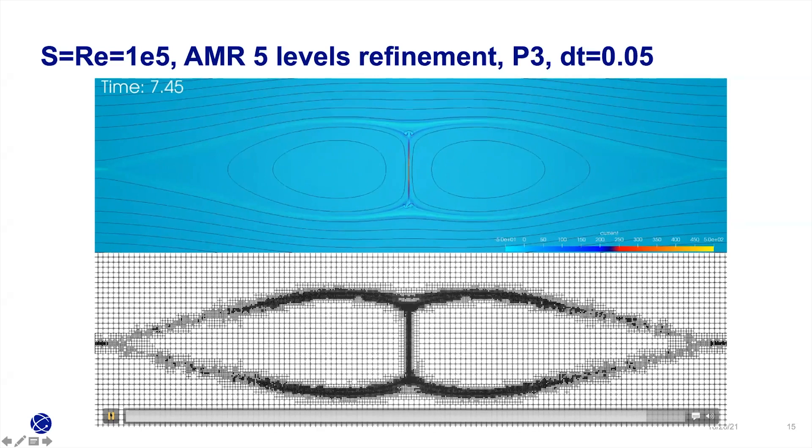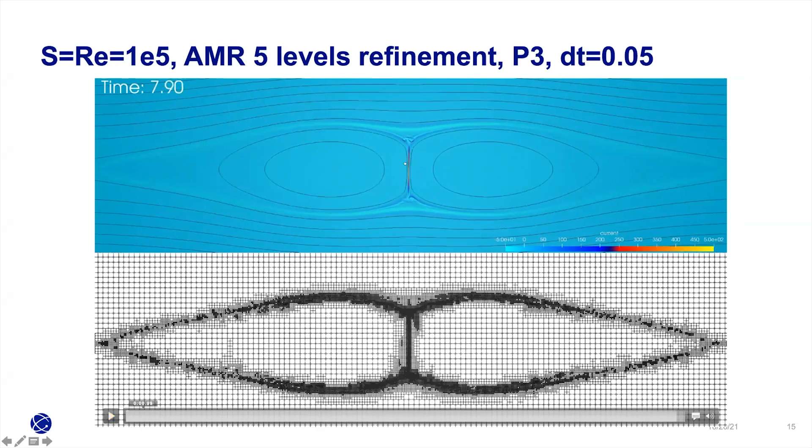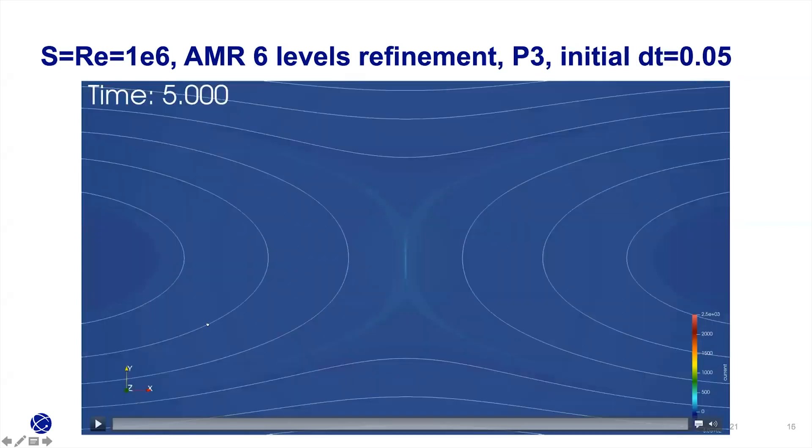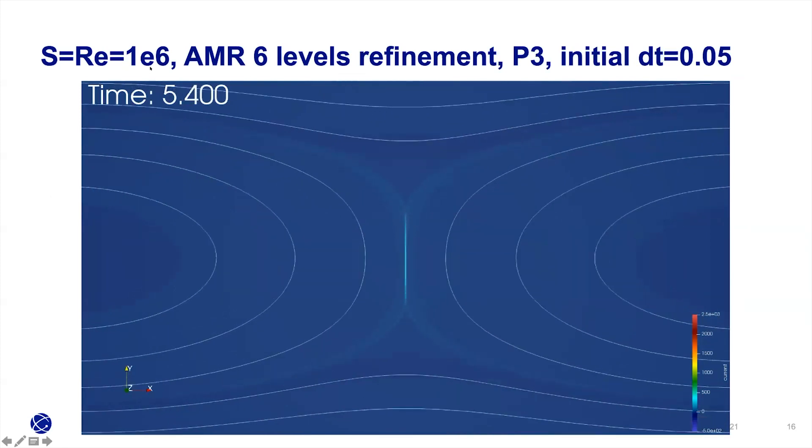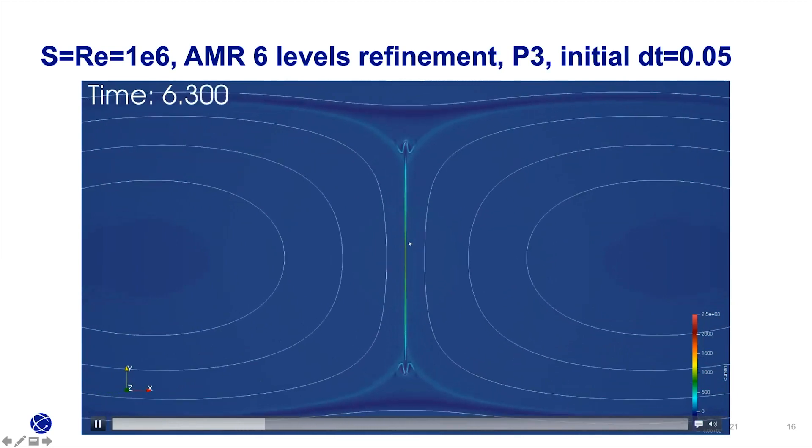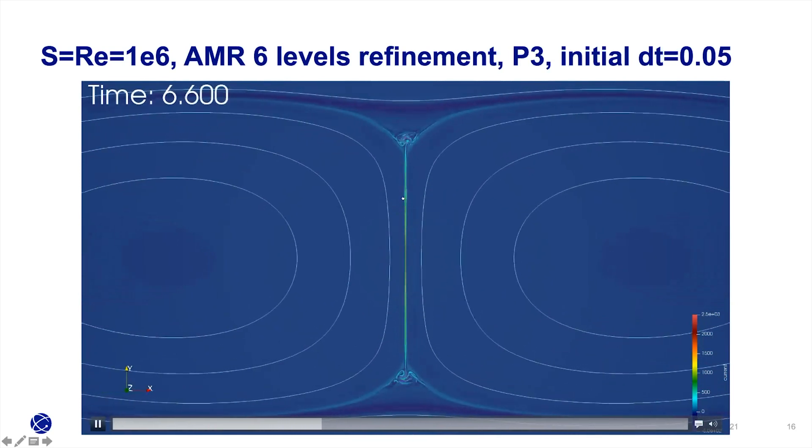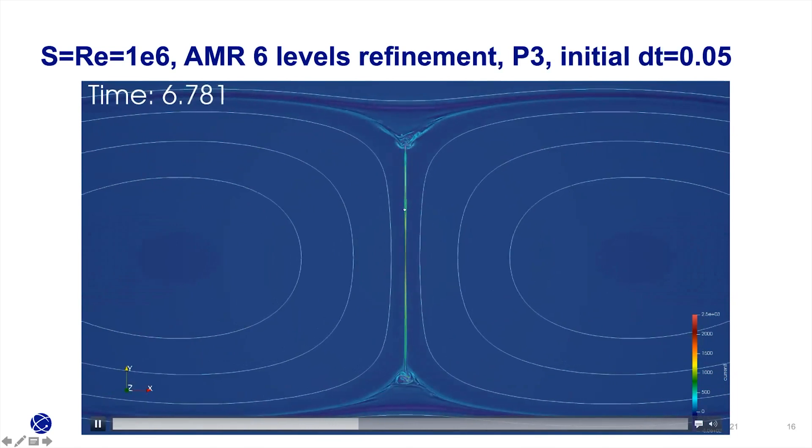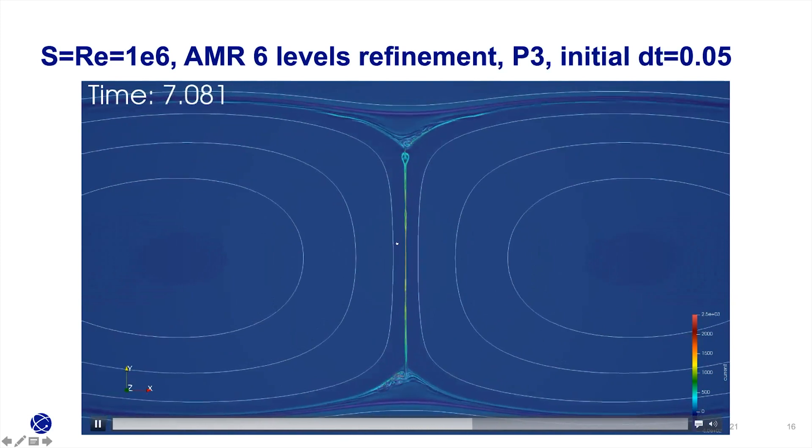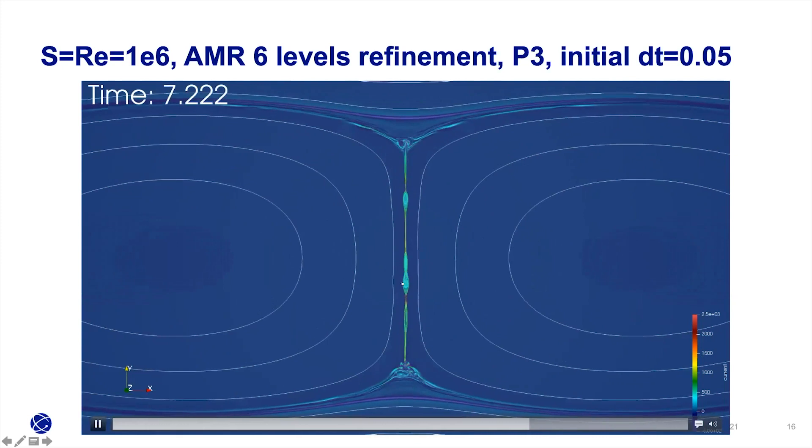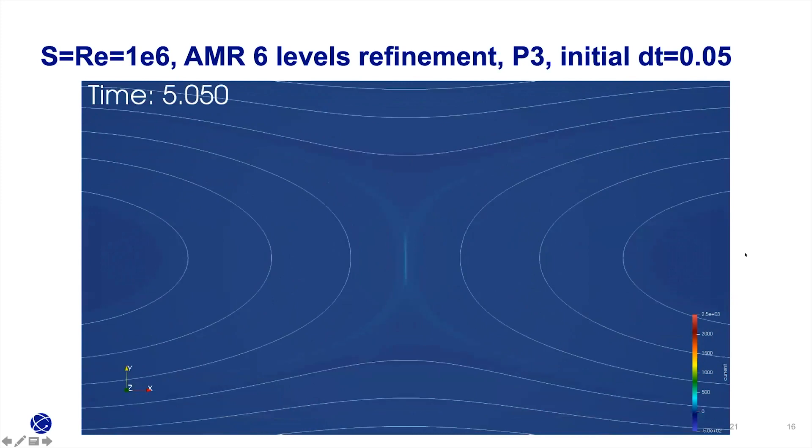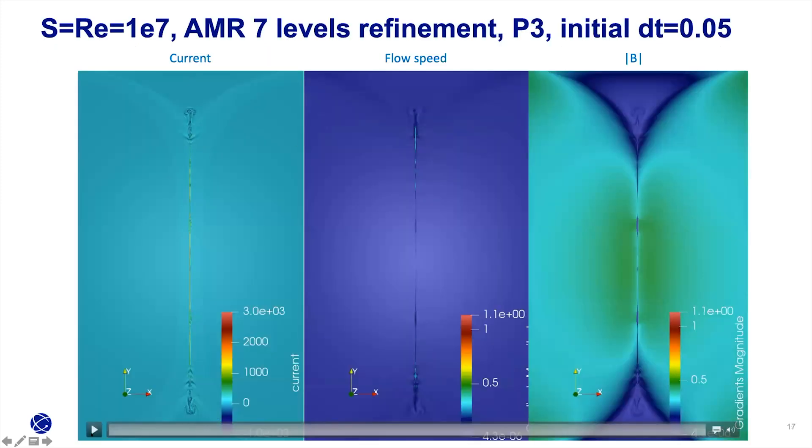If we increase the Lundquist number to 10^6, you can see the current sheet starts to break. This is even more interesting because we want our AMR to capture those plasmoids. In practice, we don't know where they are, so that's why we want to use dynamical AMR to capture those features automatically.